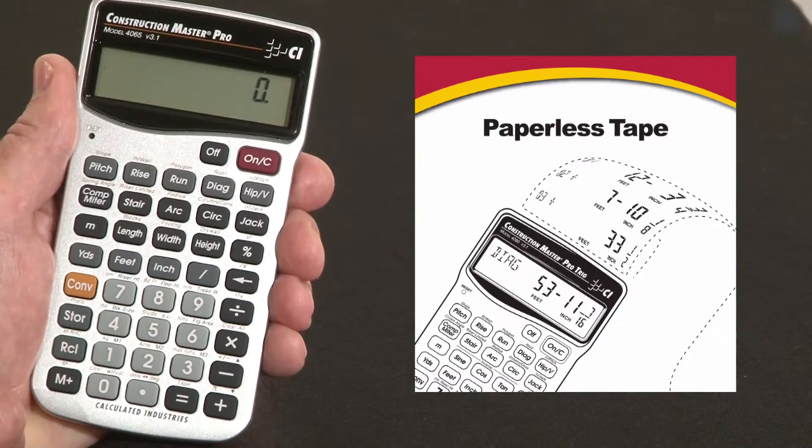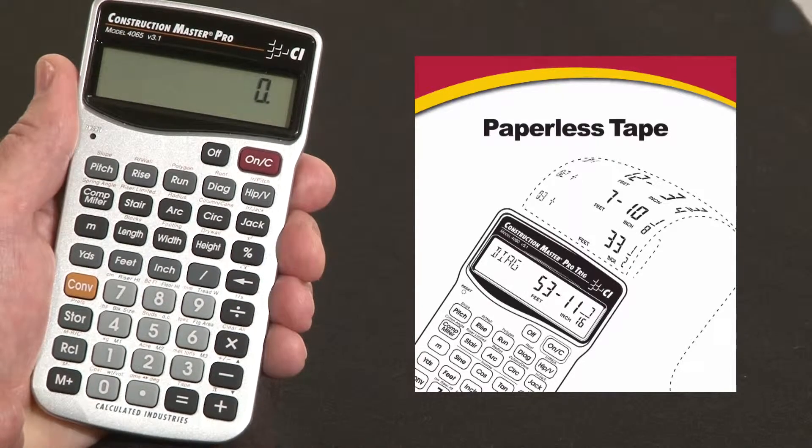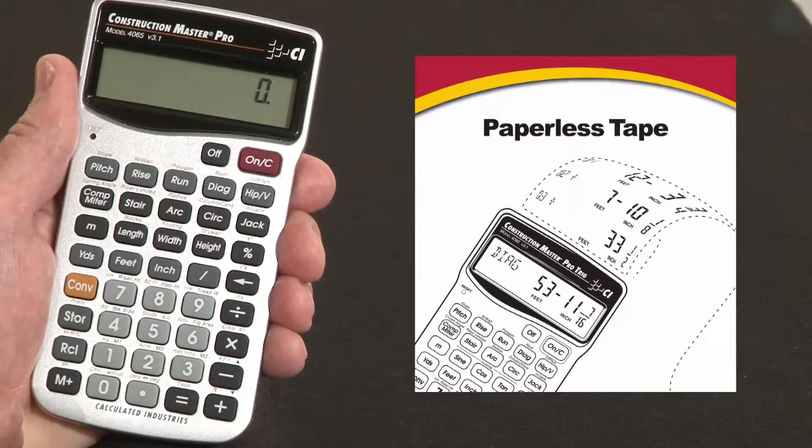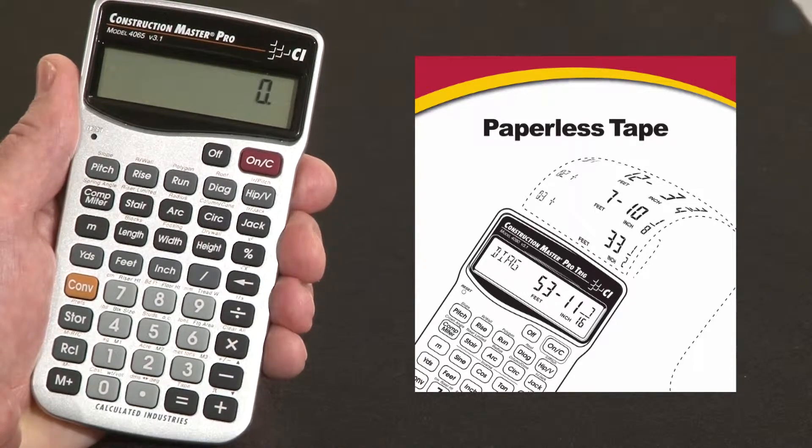One of the primary uses of the Construction Master is for adding up strings of dimensions. Some guys will re-enter them two and three times just to be sure they get the same answer. That's smart, but it's a little bit of extra work.